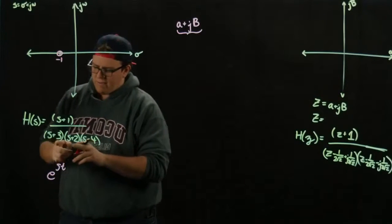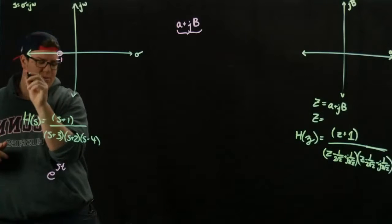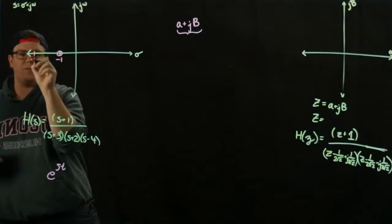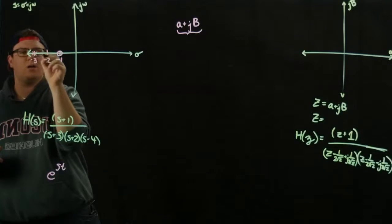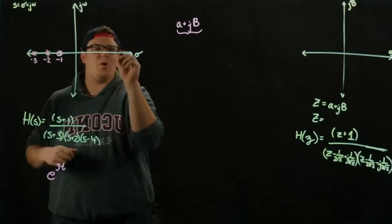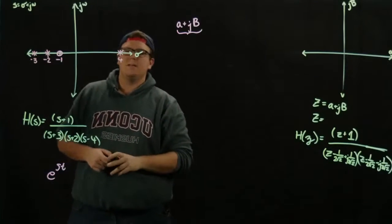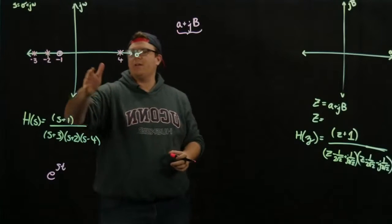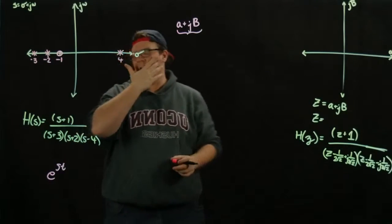We also have poles. Poles we give x's. We're going to have a pole at negative three and a pole at negative two on the real axis. And then we have a pole at positive four. So we have two poles in the left half plane and one pole in the right half plane.